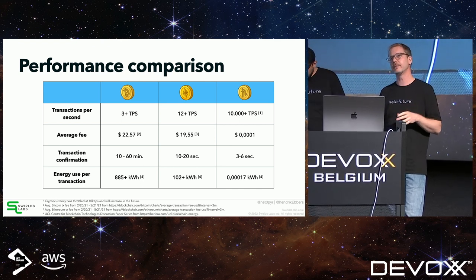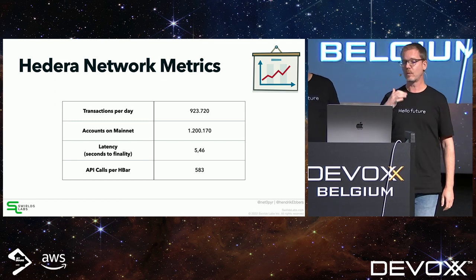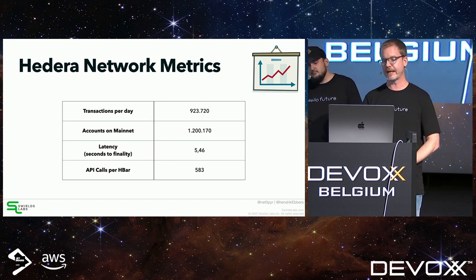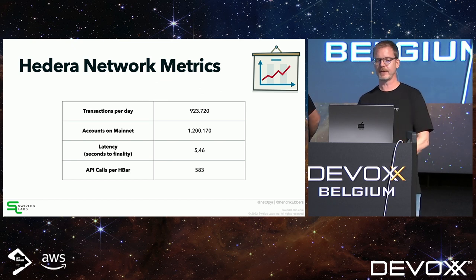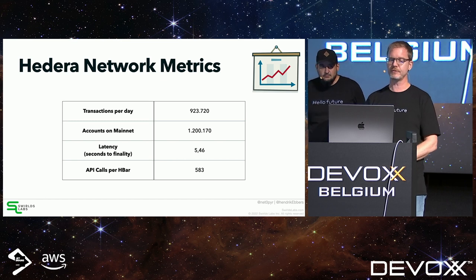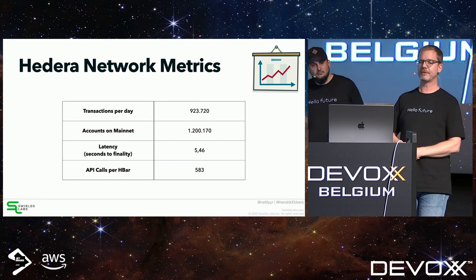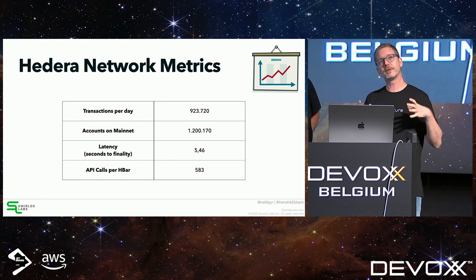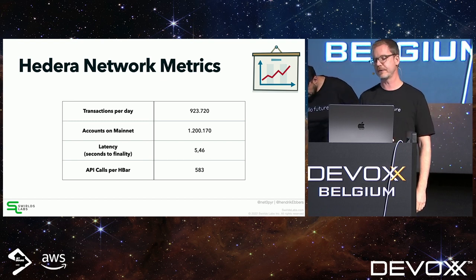Hedera is already live in production. There are over a million transactions per day and over a million accounts on mainnet. Current latency to finality is just over five seconds. The cost is about 580 API calls per HBar, and one HBar is currently less than six cents — so the low transaction costs shown in the comparison table are real production numbers.